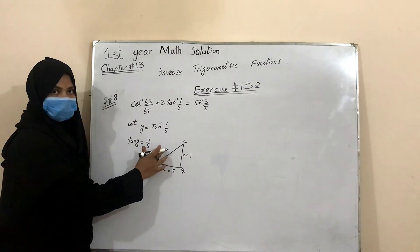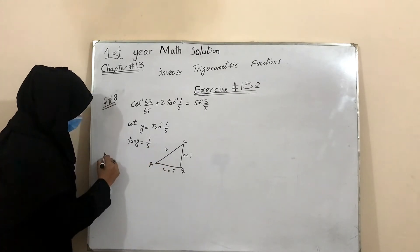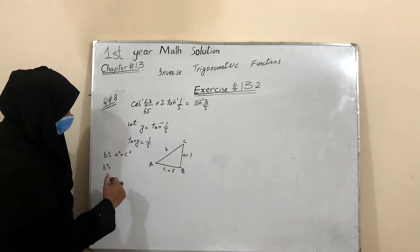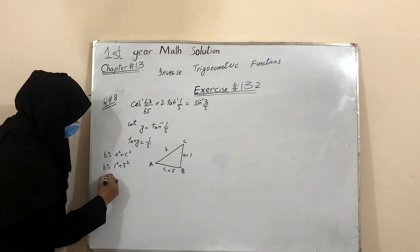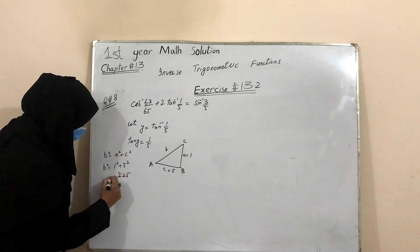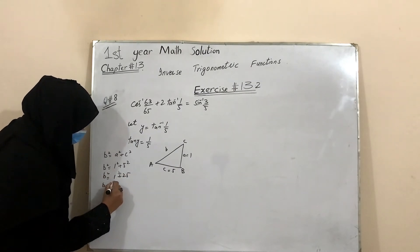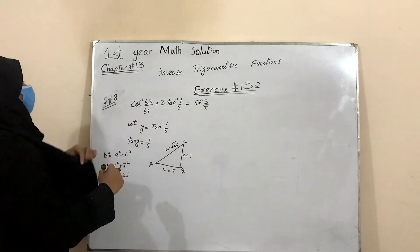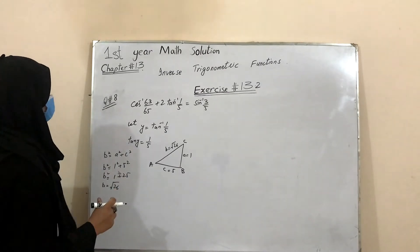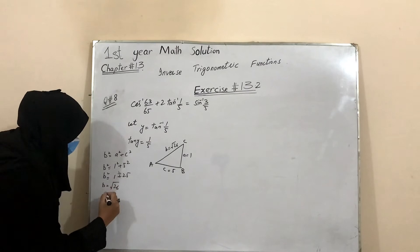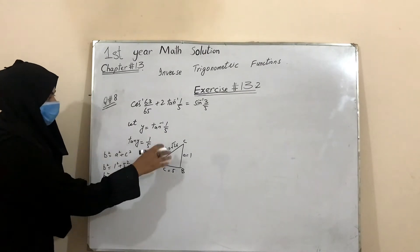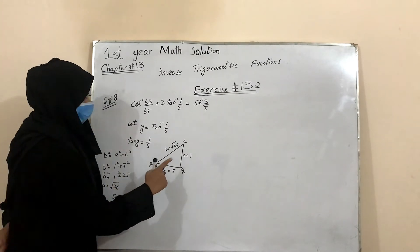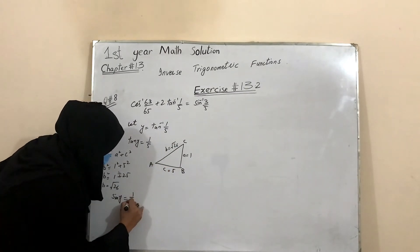We have an unknown value defined by the Pythagorean theorem. Putting the A and C values: 1 plus 25. B = sin⁻¹(1/5). We draw the Pythagorean theorem with 1 plus 25.